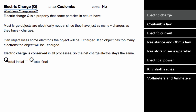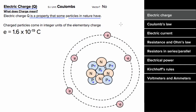Electric charge is a property that some, but not all, fundamental particles in nature have. The most commonly talked about fundamentally charged particles are the electrons, which orbit the outside of the atom — these are negatively charged. There are also protons, which reside inside the nucleus, and these are positively charged. The neutrons inside the nucleus don't have any net charge.